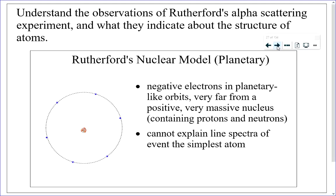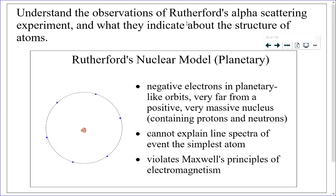There are two problems with Rutherford's model. First, it cannot explain atomic line spectra — even for the simplest atom, hydrogen, the line spectrum contains four lines that the model can't account for. Second, it contains accelerating charges: electrons in circular orbit are accelerating. Maxwell's principles of electromagnetism say that any accelerating charge produces electromagnetic radiation. But atoms don't continually produce electromagnetic radiation, which means the electrons cannot be accelerating. So Rutherford's model has two huge flaws.